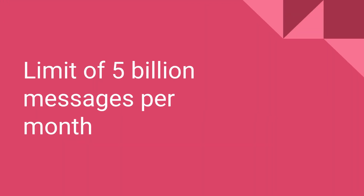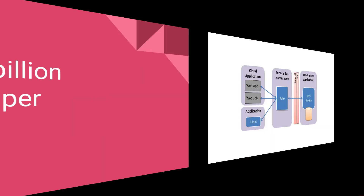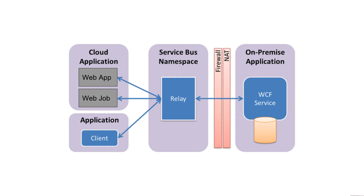There's a fairly hefty limit of 5 billion messages per month on Relay service and Hybrid Connections. If you exceed that, I think Microsoft wants to talk to you. Coming back to this diagram — because a picture is worth a thousand words — you have your Relay service running in the middle. On the on-premises side, you have a Hybrid Connection Manager. The two of those things talk, and then your cloud applications or other applications that can get into the cloud can use that WCF service from outside your firewall.